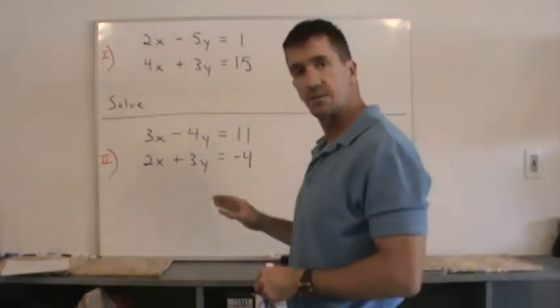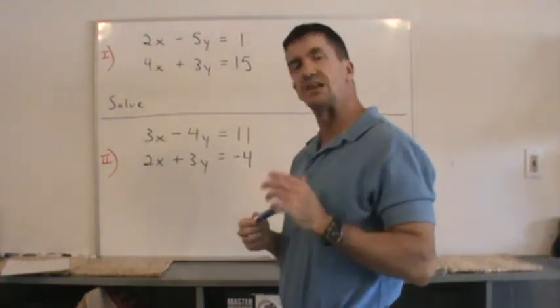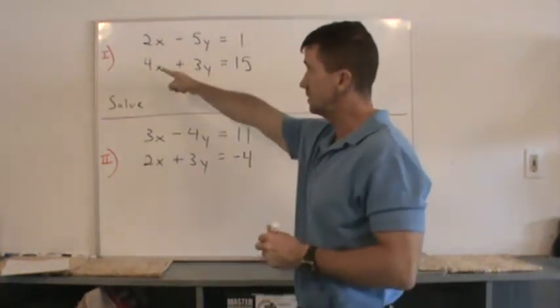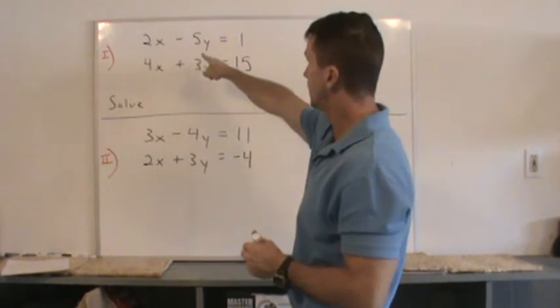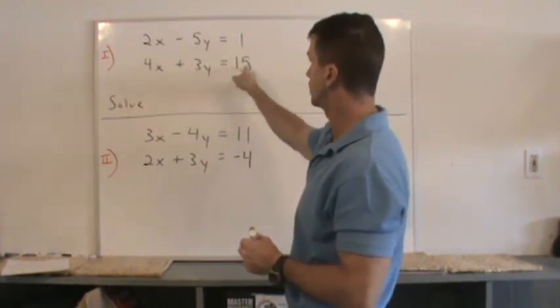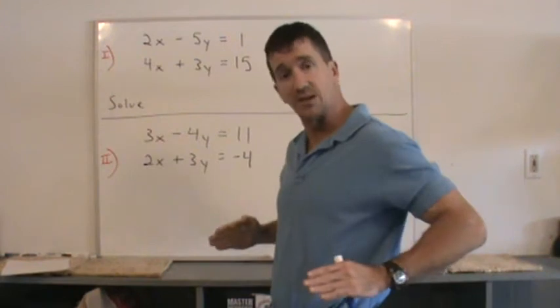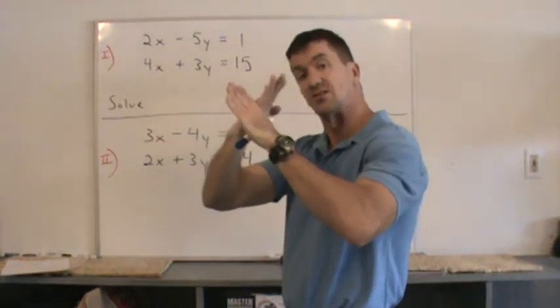In this video, we're going to solve a system of linear equations. We're going to use the elimination method. In this first example, 2x minus 5y equals 1 and 4x plus 3y equals 15. Those are two straight lines, and we're basically trying to find where those two lines intersect.